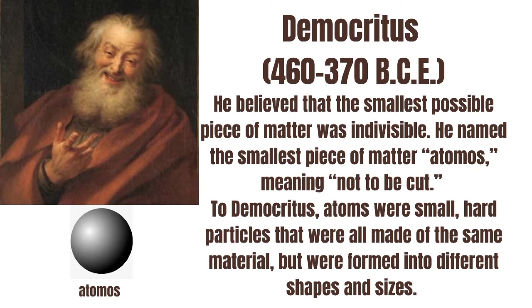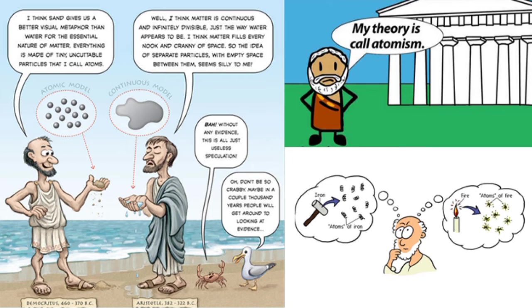To Democritus, atoms were small, hard particles that were all made of the same material, but were formed into different shapes and sizes. Philosophers do not test their ideas; instead, they use reasoning to back up their beliefs. To them, human reasoning was superior to experimentation. Democritus used an example of a beach to support his theory. From afar, the beach appears to be a solid mass, but up close one finds that a beach is made of small grains of sand too small to be seen from a distance.